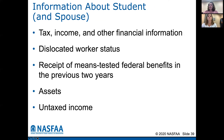Information about the student is very similar: tax information, income information, other financial information, their dislocated worker status, any receipt of means-tested federal benefits, their assets, and their untaxed income.